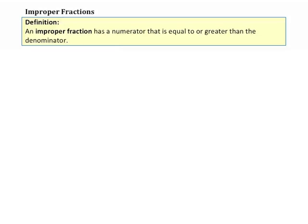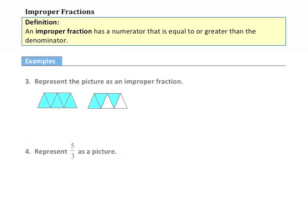Improper fractions. Let's start with a definition. An improper fraction has a numerator that is equal to or greater than the denominator. Now let's look at some examples relating an improper fraction and a picture.